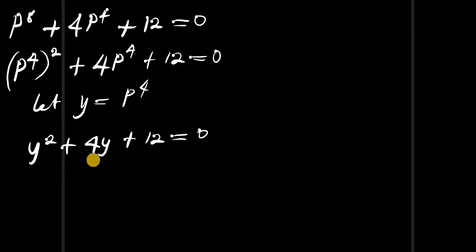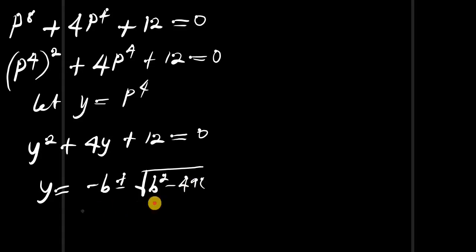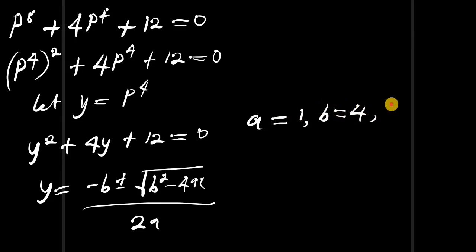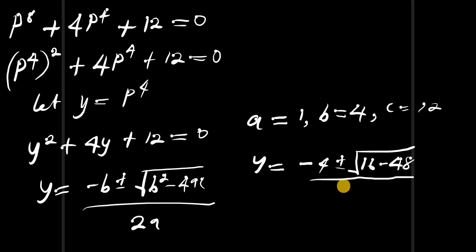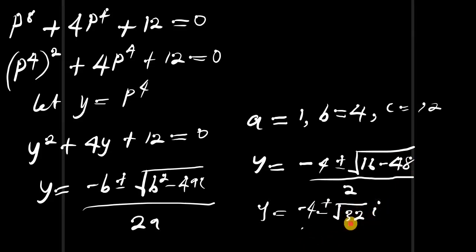This gives us y² plus 4y plus 12 equals zero, which is a quadratic equation. Using the quadratic formula, y equals negative b plus or minus the square root of b² minus 4ac, all divided by 2a, where a equals 1, b equals 4, c equals 12. So y equals negative 4 plus or minus the square root of 16 minus 48, divided by 2, giving us square root of negative 32, which involves the imaginary number i.